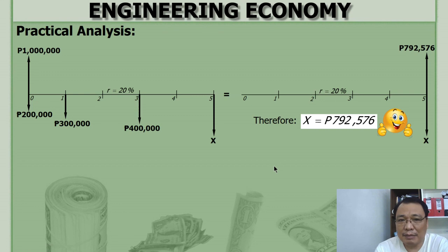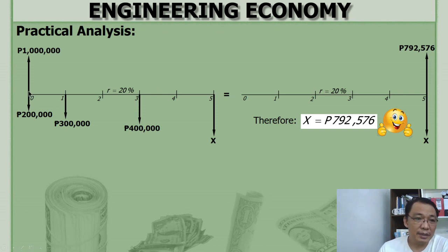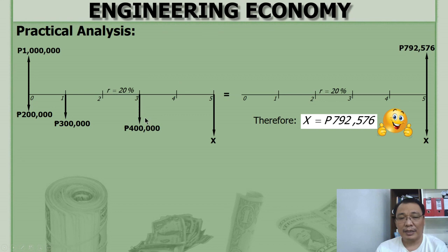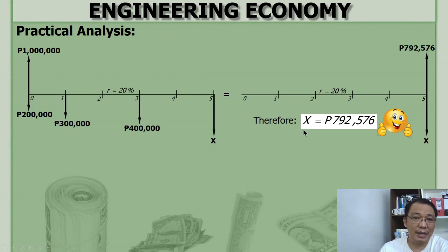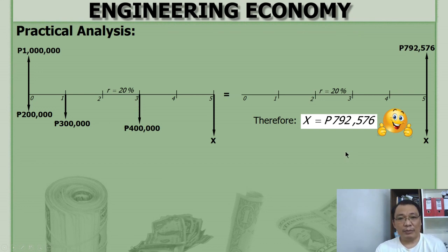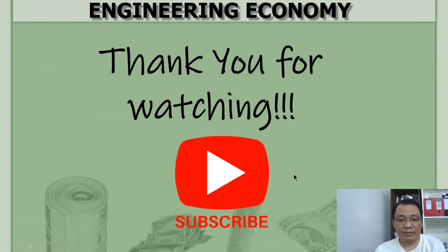So in summary, for the equation of value, use the same focal date for all obligations. Make sure not to mix up the payments. It doesn't matter whether your focal date is at zero, the last period, the middle, or even beyond the last payment — the result is the same. I hope you have learned something from this presentation. Thank you for watching.